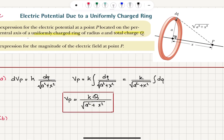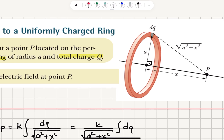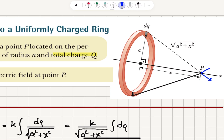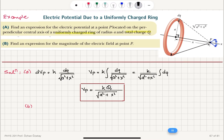Now, for the electric field at point P: when I pick a charge element dQ, the electric field due to that element points in a certain direction. If I pick another charge element dQ symmetric with respect to the central axis, it will have exactly the same electric field magnitude, and the y-components of those two contributions cancel each other. Therefore, the y-component of the electric field at point P is zero due to symmetry.